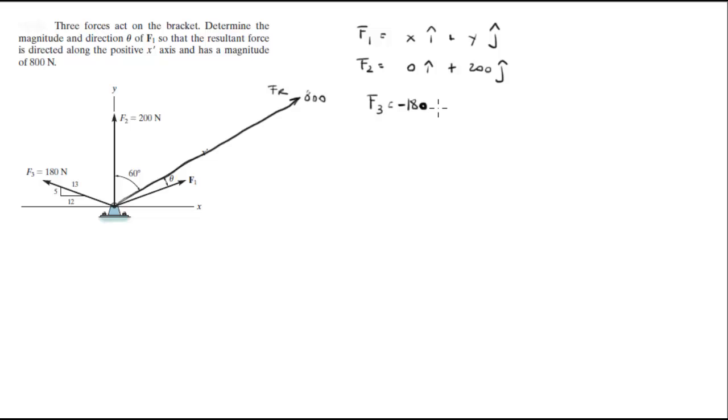f3 is 180, negative 180 times 12 over 13i.